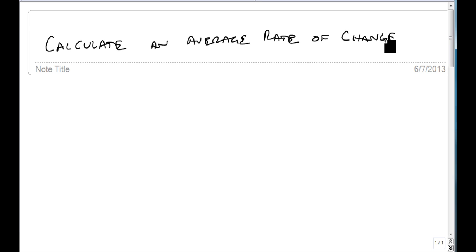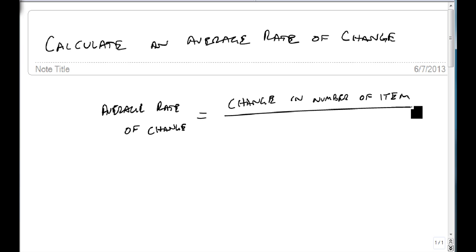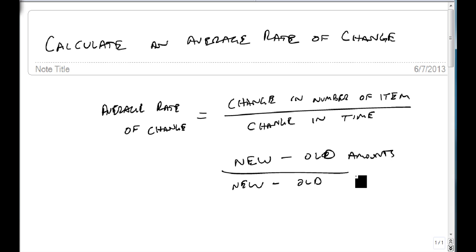We are going to look at a method for this. Whatever is changing, our average rate of change equals the change in the number of the item, like an amount of newspapers sold or an amount of water drunk, and on the bottom is the change in time or the change in distance. Notice this change implies a subtraction. We are going to take the new and subtract the old from it. We are going to divide that by the new time or the later time. This is amounts and this is time or distance. This is how we calculate it.